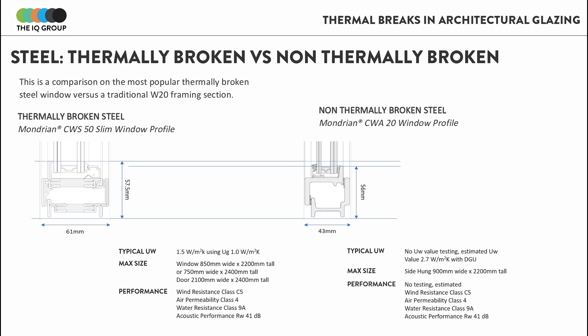Here you can see a very traditional steel section — the CWA 20 system from Mondrian — compared to the fully thermally broken CWS 50 slim section from Mondrian. The increase in profile size is very minimal, but the improvement in overall thermal performance is very significant.